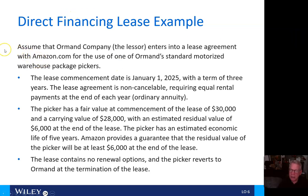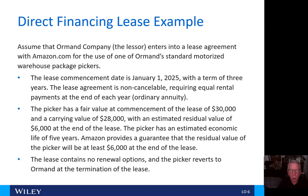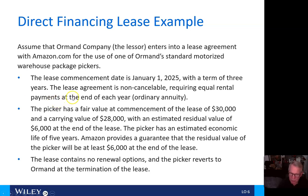Let's look at the Ormond Company, the lessor, which enters into a lease agreement with Amazon.com for the use of one of Ormond's standard motorized warehouse package pickers. The lease commencement date is January 1, 2025, with a non-cancellable term of three years, requiring equal rental payments at the end of each year — an ordinary annuity. The picker has a fair value of $30,000 and a carrying value of $28,000, with an estimated residual value of $6,000 at the end of the lease, and an estimated economic life of five years. Amazon provides a guarantee that the residual value will be at least $6,000.